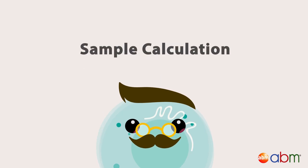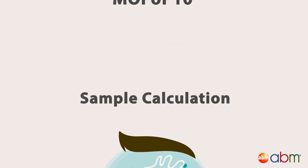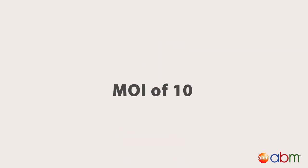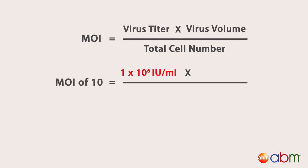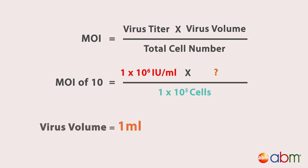Let's do a quick sample calculation. Let's say you'd like to achieve an MOI of 10. If your virus titer is 1×10⁶ infection units per mL, and you're delivering to 1×10⁵ cells, what volume of virus will you need? You will need 1 mL of virus.